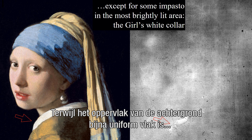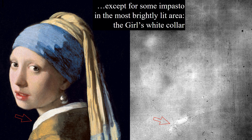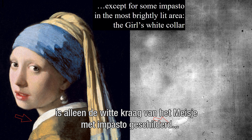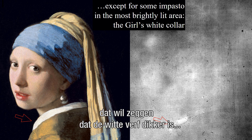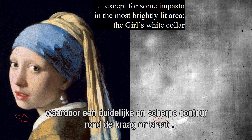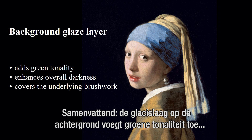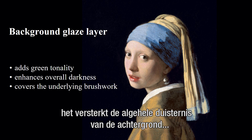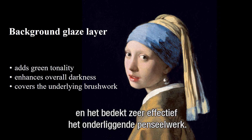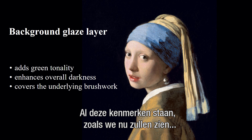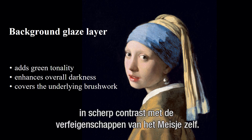While the surface of the background is almost uniformly flat, only the white color of the girl is painted with impasto — that is to say, the white paint is elevated from the surrounding area, producing a distinct and sharp contour line around the color, which also happens to be the brightest part of the painting. In summary, the background glaze layer adds green tonality, it enhances the overall darkness of the background, and it very effectively covers up the underlying brushwork. All these features stand in sharp contrast with the paint characteristics of the girl itself.